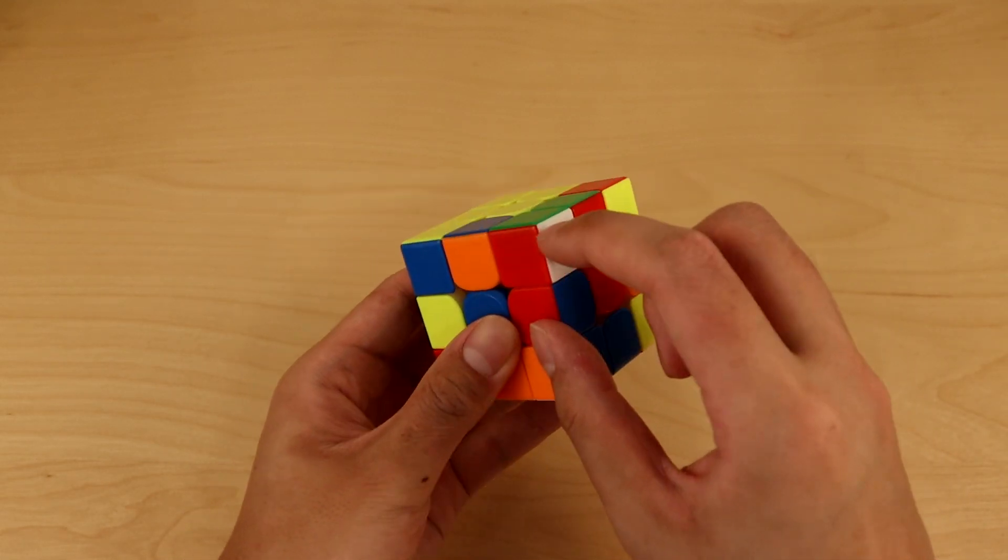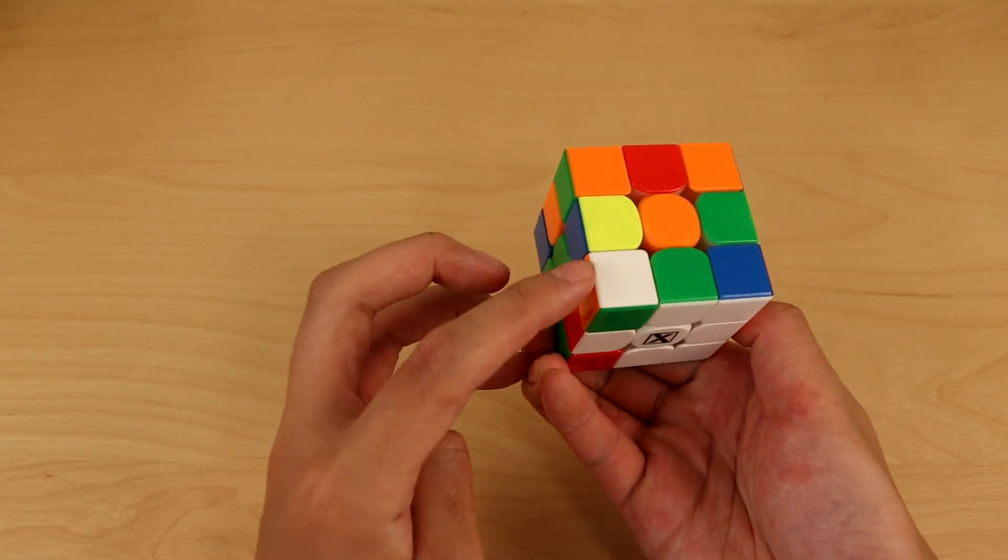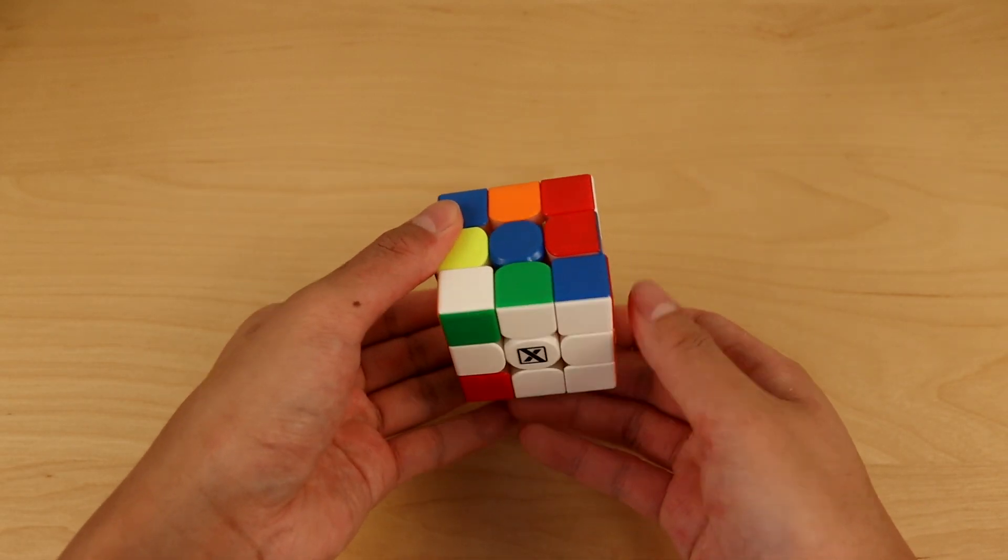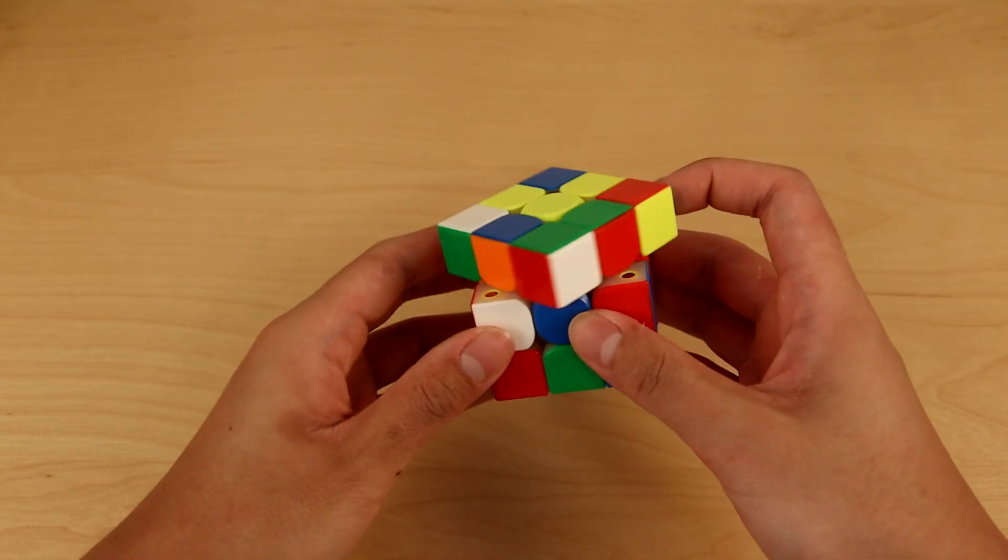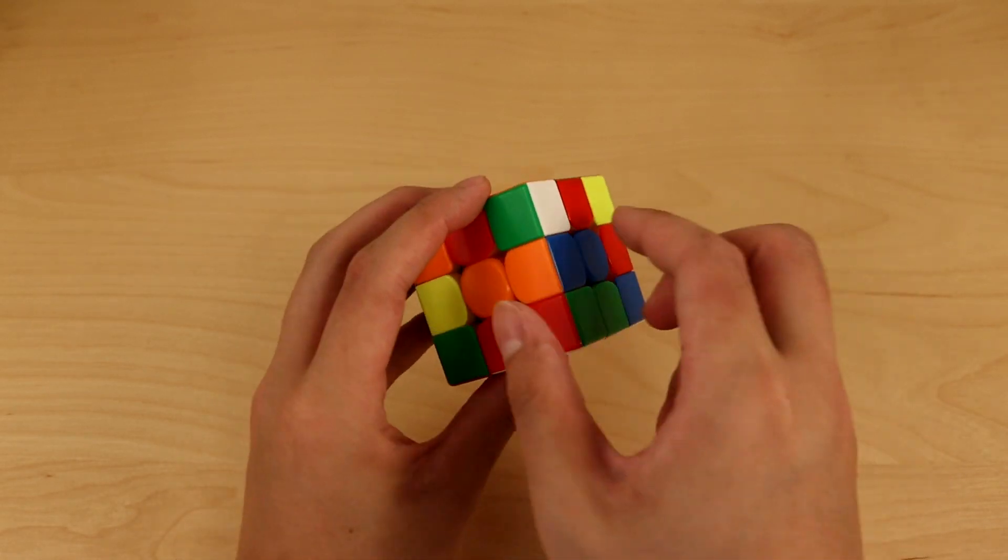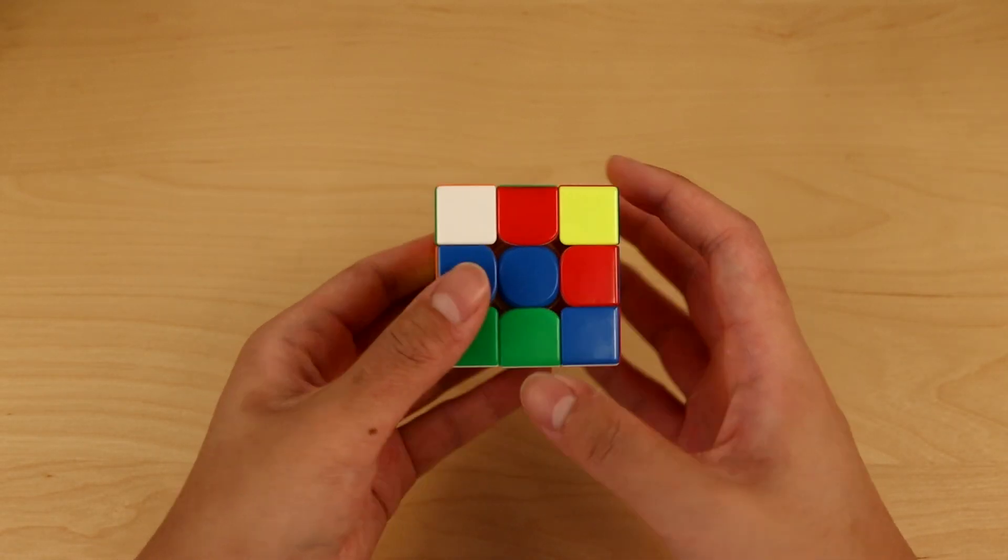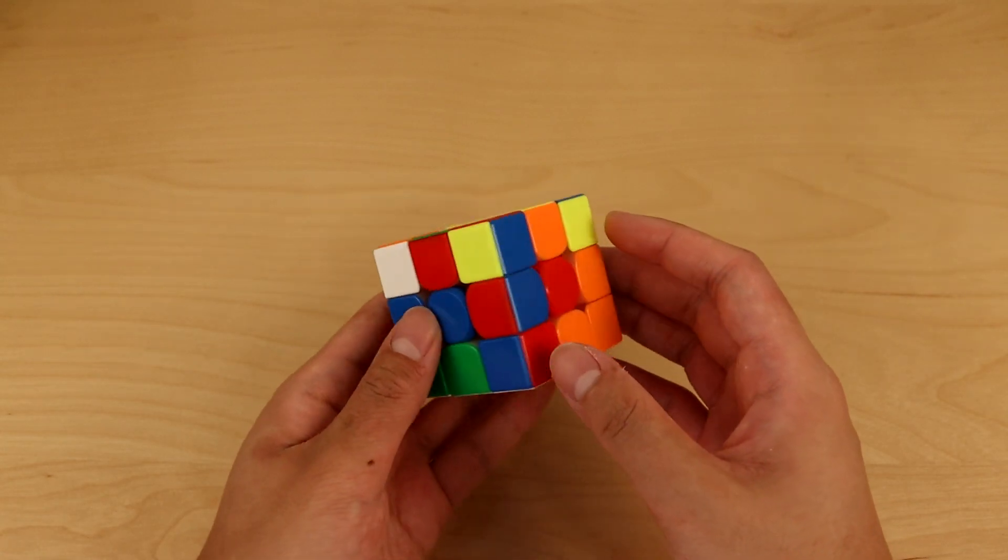This one is the green, red, white corner that belongs here. So let's move the bottom layer and then insert these two together. Now we solved an edge and a corner at the same time, which is some pretty insane seal slotting to be planning in inspection.